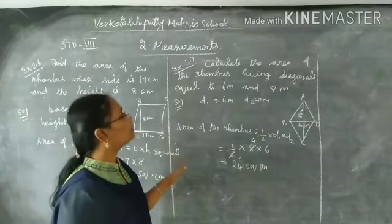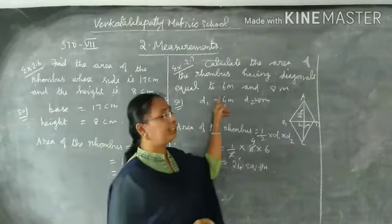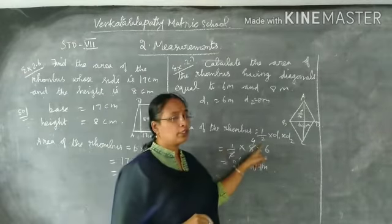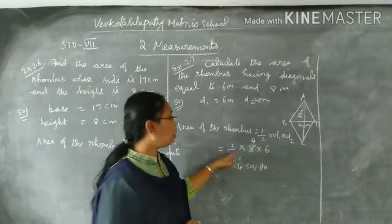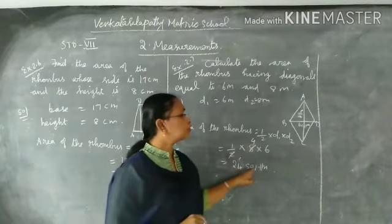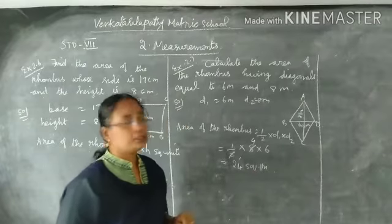Next, let us find the area of the rhombus having diagonal. One diagonal is 4, other diagonal is 6. Area of the rhombus with diagonals, so we use half into d1 into d2. So half into 4 into 6, which is 12 square meters.